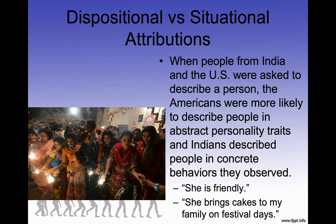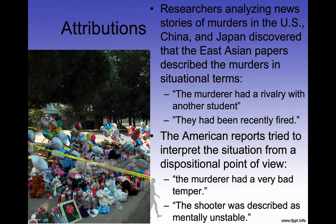When people from India and the United States were asked to describe a person, Americans were more likely to describe them in abstract personality traits, while Indians described them in concrete observed behaviors: 'She is friendly — she brings cakes to my family on festival days.' Americans would instead describe personality traits. Researchers analyzing news stories of murders in the U.S., China, and Japan found that East Asian papers described murders in situational terms — 'the murderer had a rivalry with another student' or 'had been recently fired' — while American reports used dispositional terms: 'the murderer had a very bad temper' or 'the shooter was mentally unstable.'